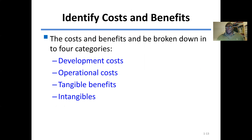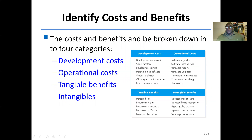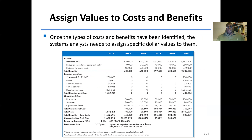To identify costs and benefits, they may be broken down into four categories: development costs, operational costs, tangible benefits, and intangibles. Intangible benefits, such as higher quality products, cannot be easily quantified. Tangible benefits, such as reduction in inventory costs or reduction in IT costs, can be quantified. An example table assigns values to these costs and benefits for analysis.